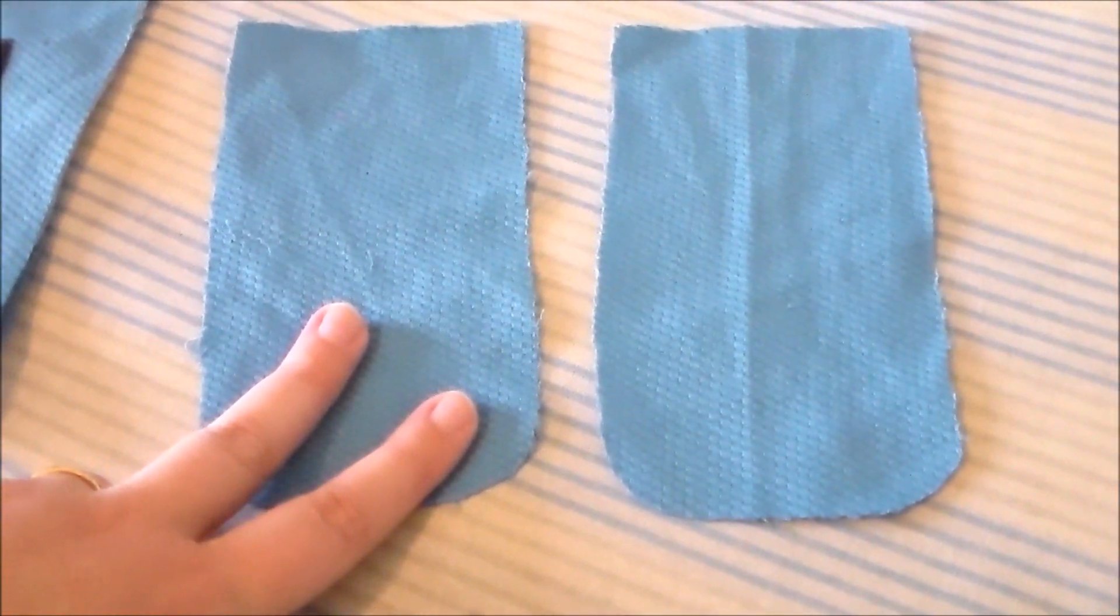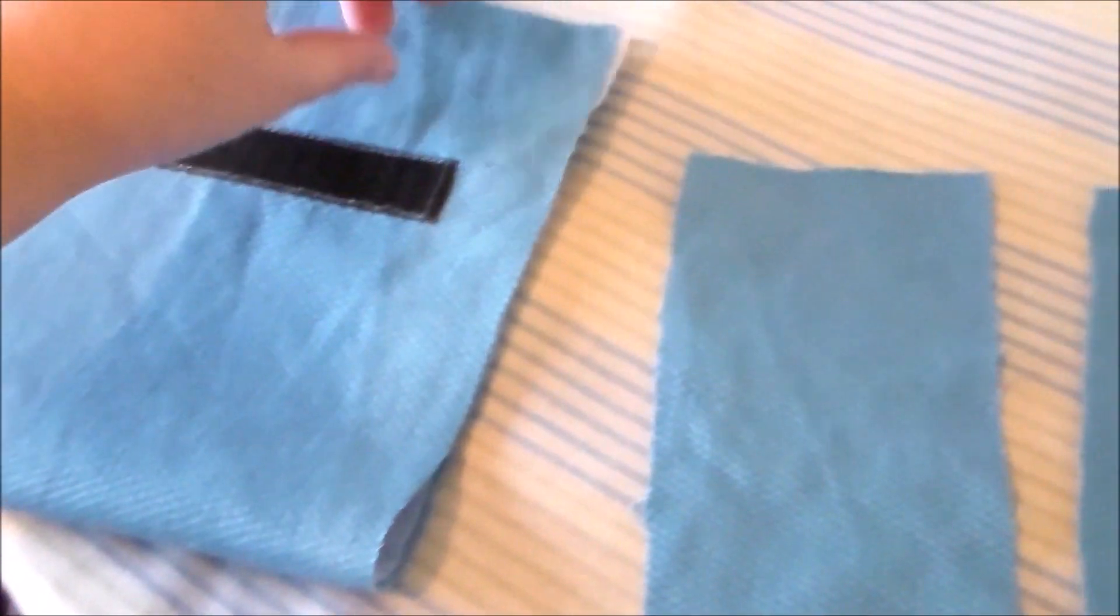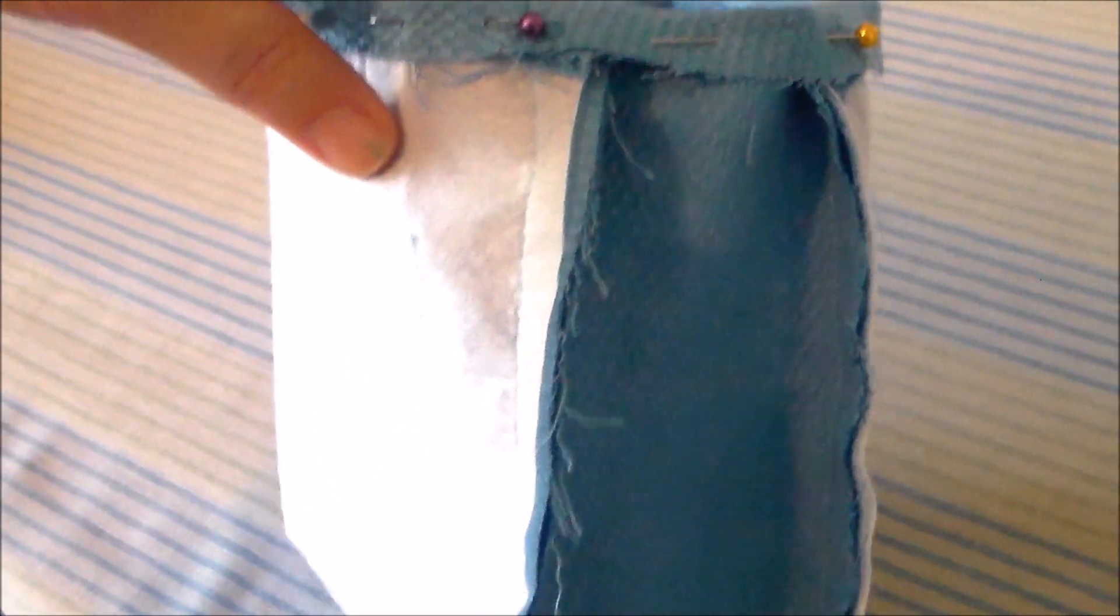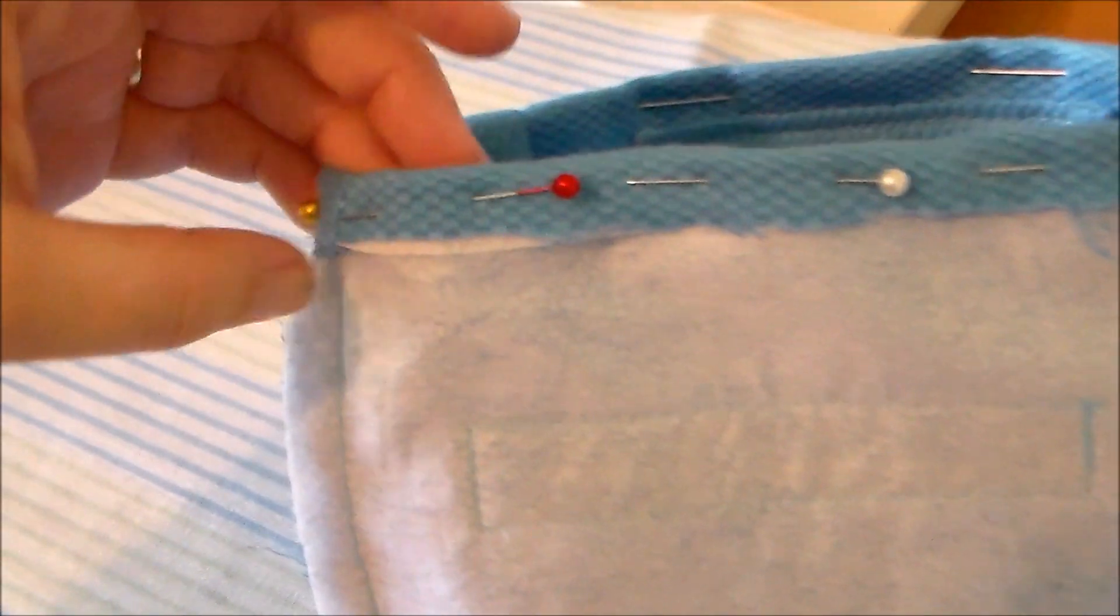Cut two of the pouch side pieces out of the blue fabric. Now we're going to sew them to the base pouch rectangle. After the pouch sides have been sewn on we're then going to fold over the top and hem it. This is what the pouch looks like once it's been turned right side out.